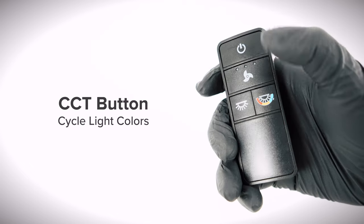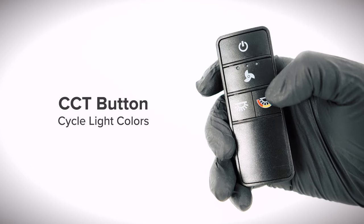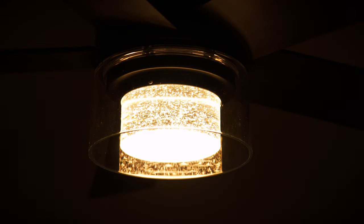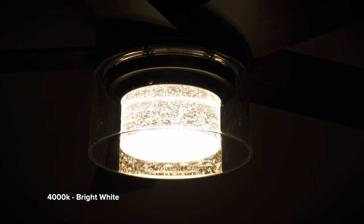Press the correlated color temperature button to cycle through the three color temperature options. The light can be set to 3000K soft white, 4000K bright white, and 5000K daylight.